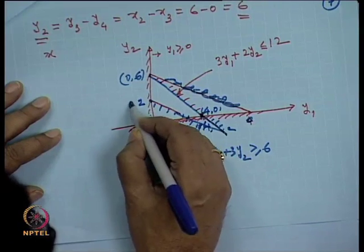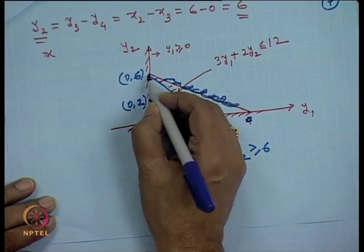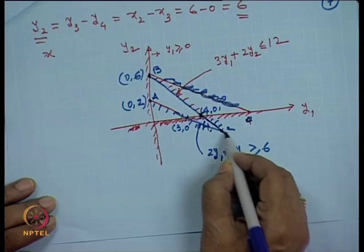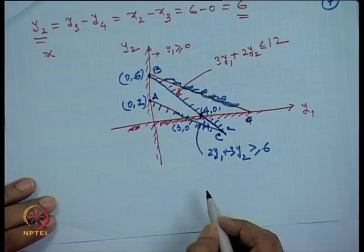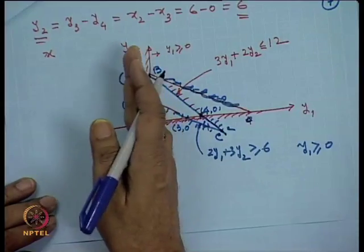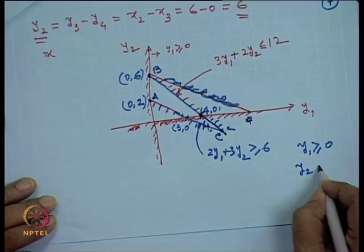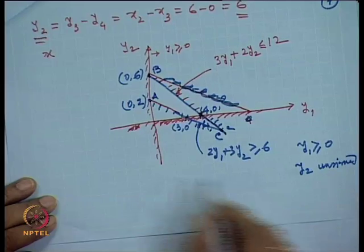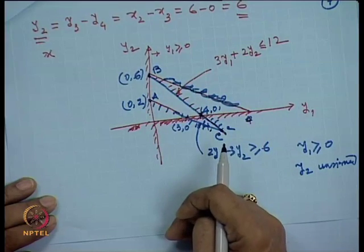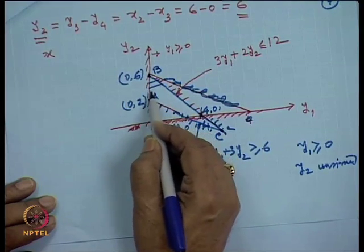On the graph, let point B be where the curve cuts the x-axis, point A where it cuts the y-axis, and point C be the intersection of the two straight lines. Since y1 ≥ 0, the feasible region lies to the right of the vertical axis. Since y2 is unrestricted in sign, it can be positive or negative — above or below the horizontal axis — giving our feasible region.